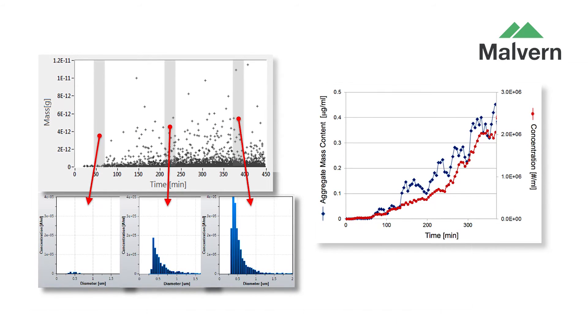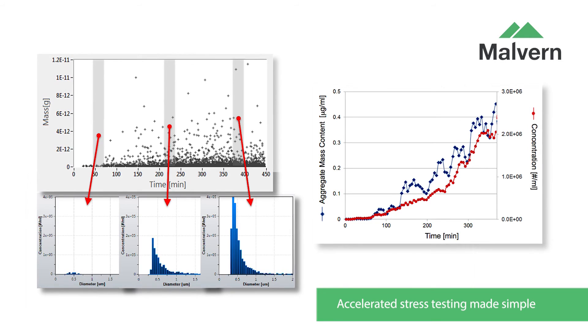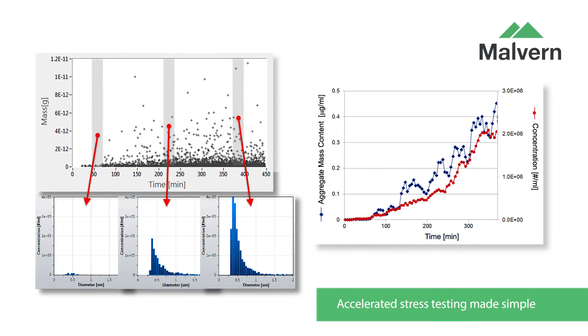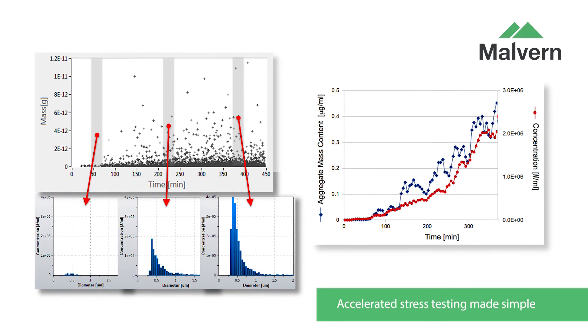Accelerated stress testing is a natural fit for Archimedes, which supplies rapid early information on your product's tendency to aggregate when subjected to stresses such as shear or temperature.